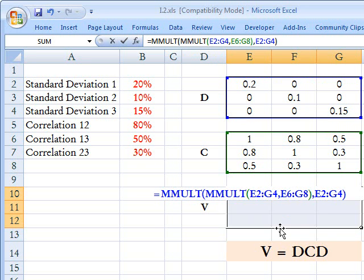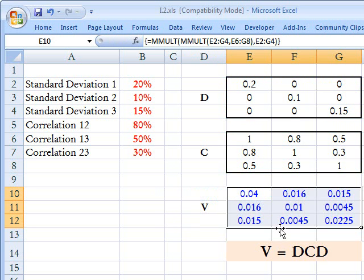We want to finish a matrix formula by hitting Control-Shift-Enter. It's easy to forget that. That's the key to ensuring that I have an array formula, and what I've produced here is the covariance matrix.